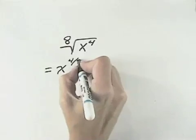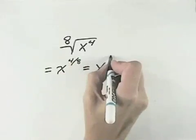So we have x to the 4 over 8, and we can simplify 4 and 8 to be x to the 1 half.